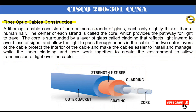Fiber-optic cable construction. A fiber-optic cable consists of one or more strands of glass, each only slightly thicker than a human hair. The center of each strand is called the core, which provides the pathway for light to travel. The core is surrounded by a layer of glass called cladding that reflects light inward to avoid loss of signal and allow the light to pass through bends in the cable. The two outer layers protect the interior and make cables easier to install and manage, while the inner cladding and core work together to allow transmission of light. The structure from inside out is: core, cladding, coating, strength member, and outside jacket.